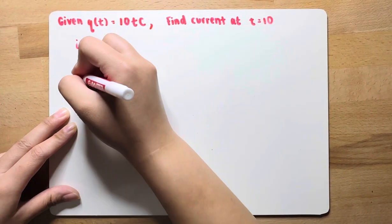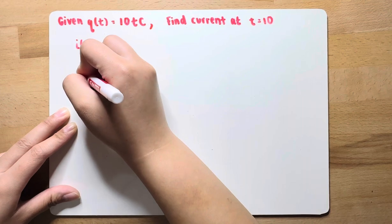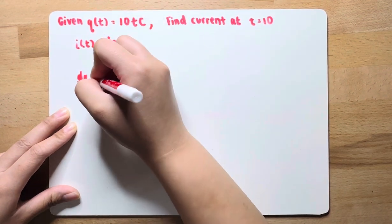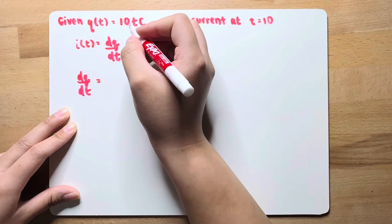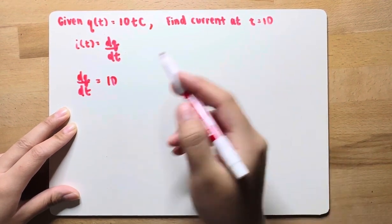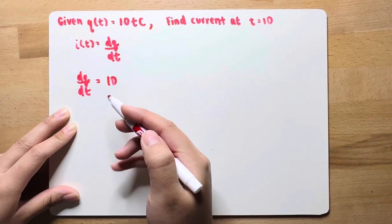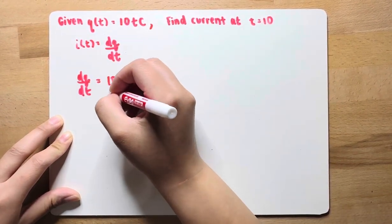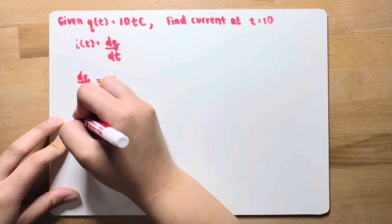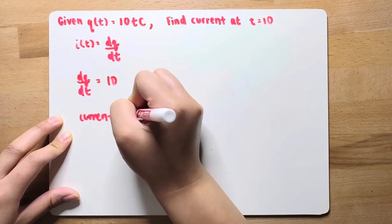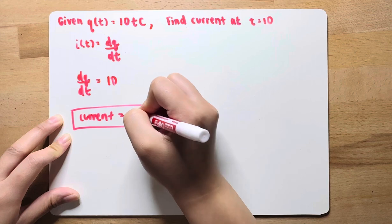You first have to derive this in terms of t. Deriving it just gives you 10. Then you need to plug in whatever t is. But because this doesn't have any t in the equation, the current is just going to be 10 amps.